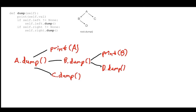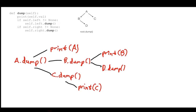I still have d.dump() and c.dump() to evaluate. C is a leaf with no children, so both conditions are false — it just prints C. D is similarly a leaf with no children, so both conditions are false — it just prints D.